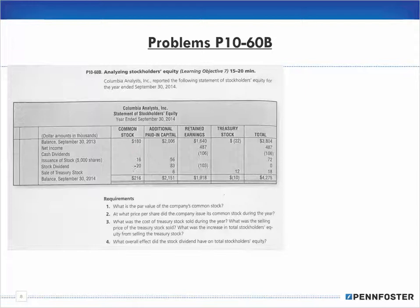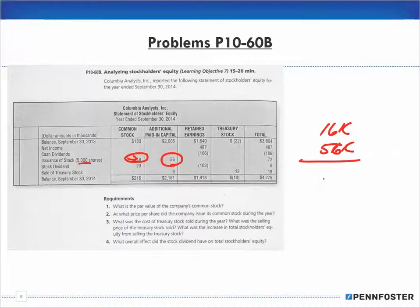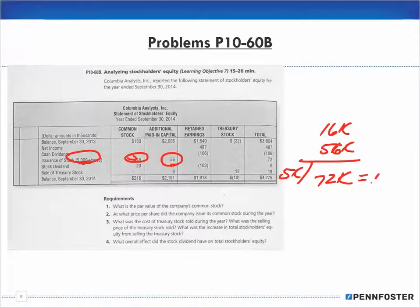For question two — at what price per share did the company issue its common stock during the year? We have $16,000 in common stock and additional paid-in capital of $56,000, so the total issuance value is $72,000. We divide $72,000 by the 5,000 shares issued, which gives us $14.40 per share.